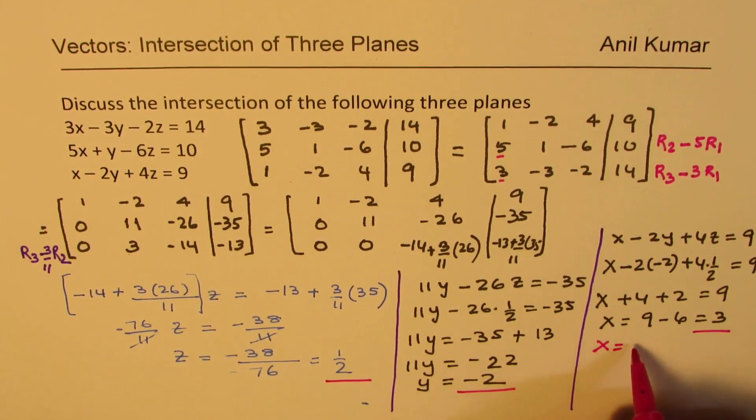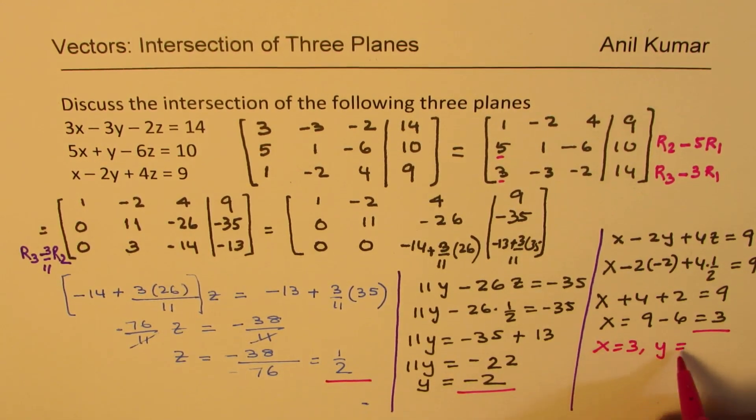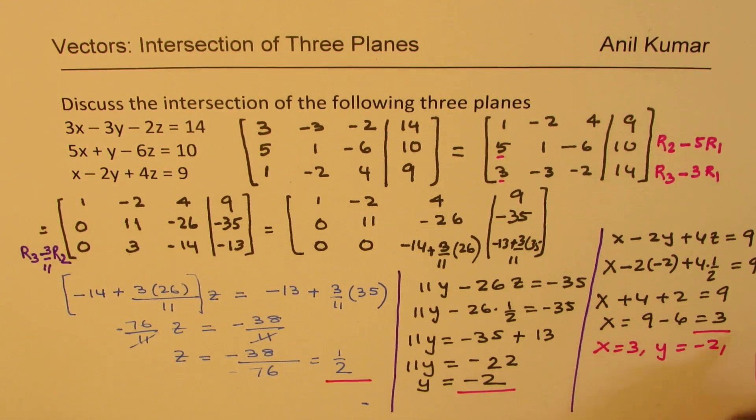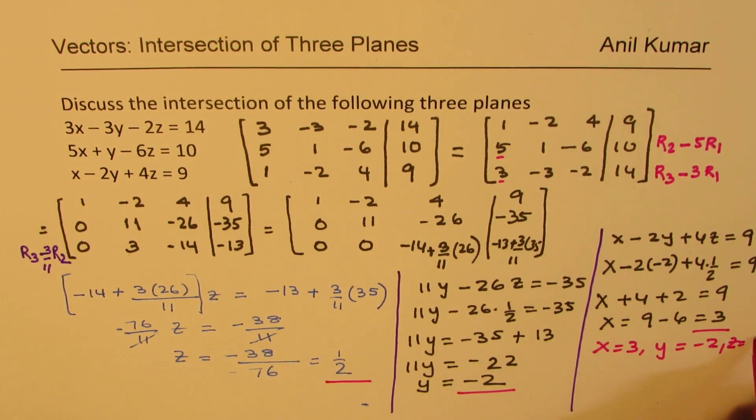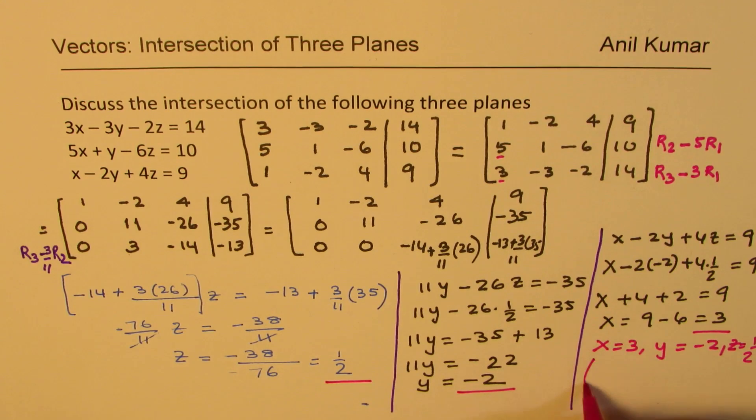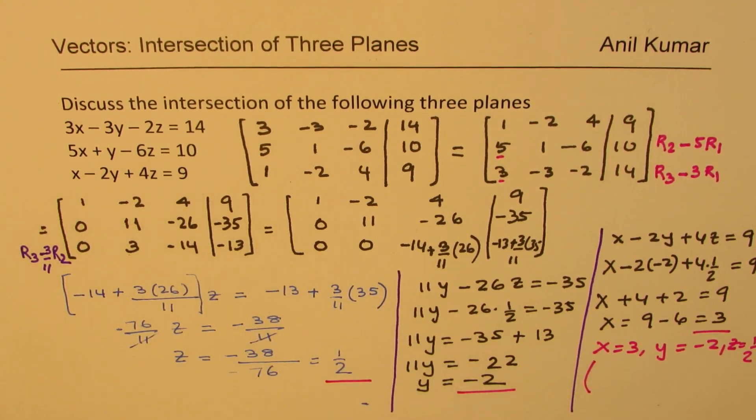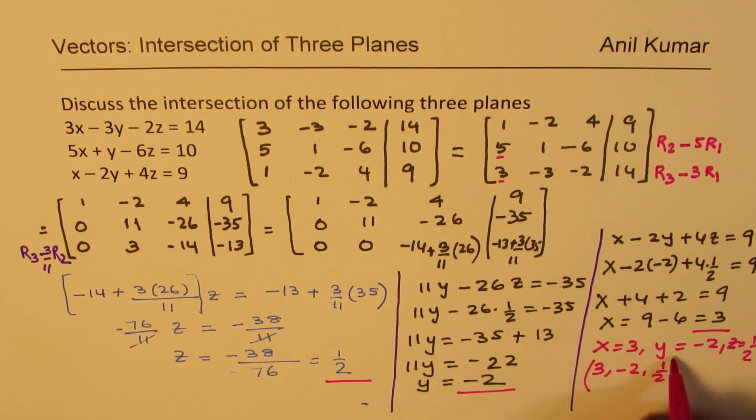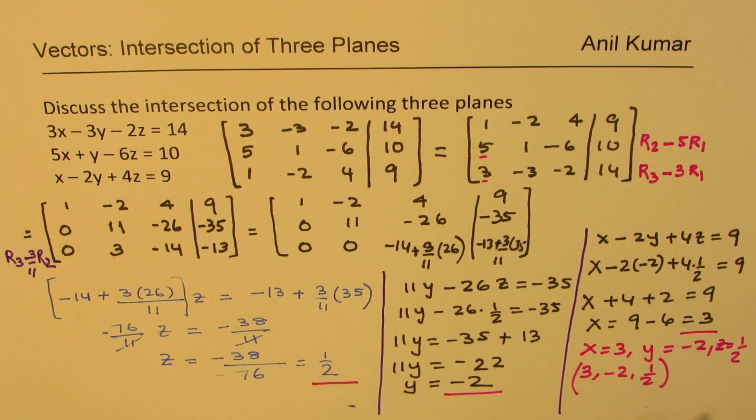So we get all the three answers here. x is equal to 3, y is equal to minus 2, and z is equals to half. So we get a point of intersection for these three planes. And the point of intersection is 3, minus 2, half. Is that clear to you?